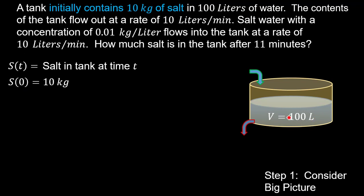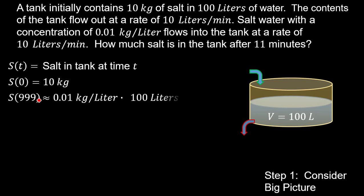It's worth noting that the volume of 100 liters stays the same, because the flow rate in and out are both 10 liters per minute. Also, if we consider the long-term behavior — S of 999, representing a long time — we expect the concentration to approach what we're pouring in times the total volume: 0.01 kg/L times 100 L equals 1 kilogram.